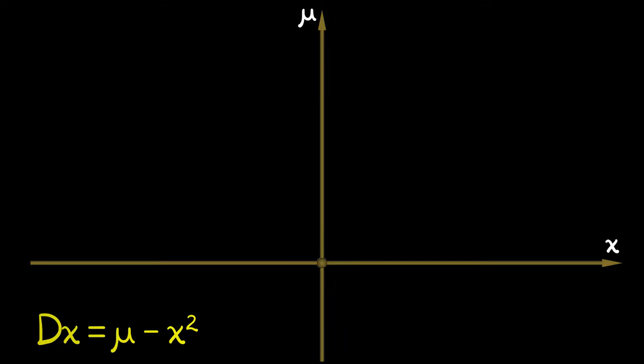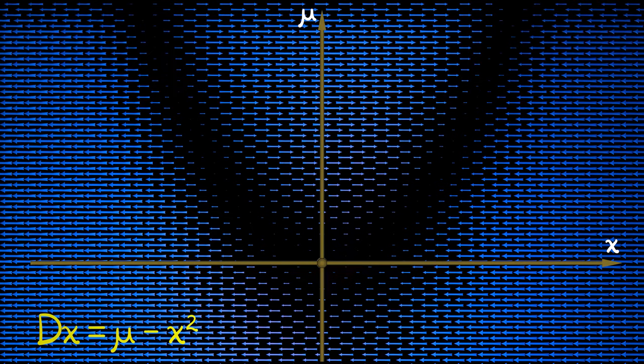And I'm looking at the system dx equals mu minus x squared. We could begin by drawing the vector field for this, where sometimes the vectors are pointed to the left, sometimes they're pointed to the right,